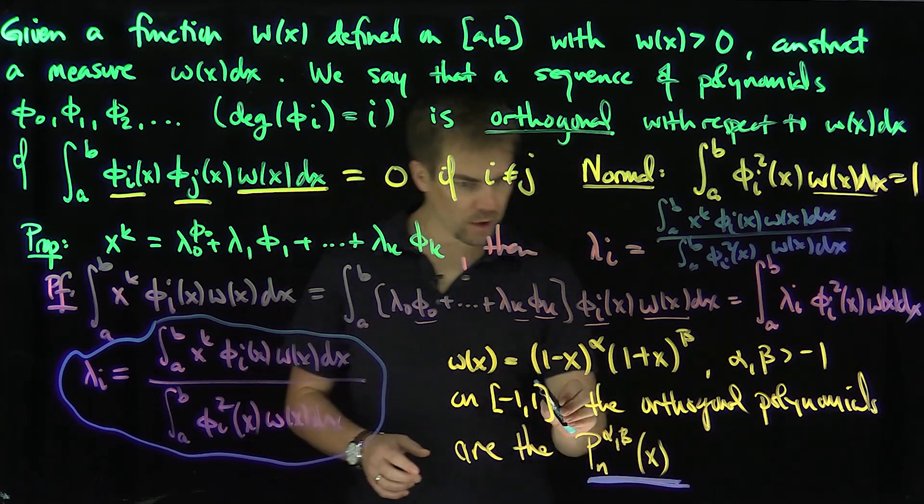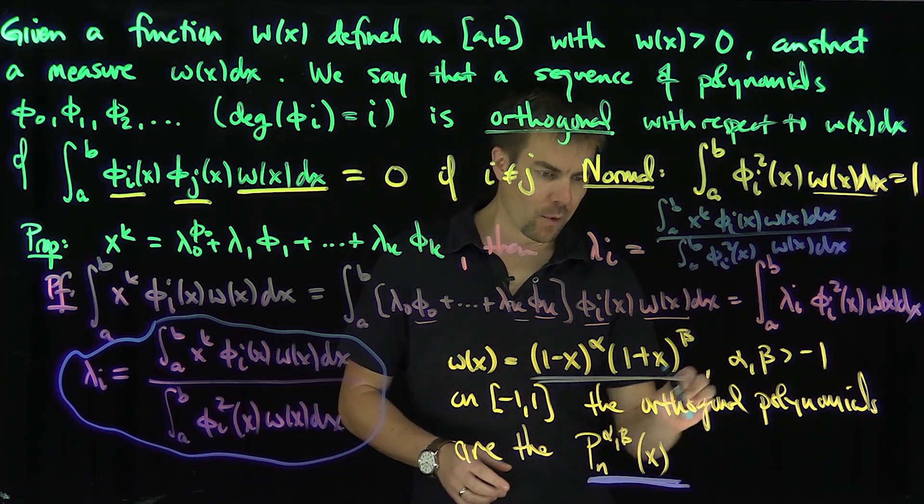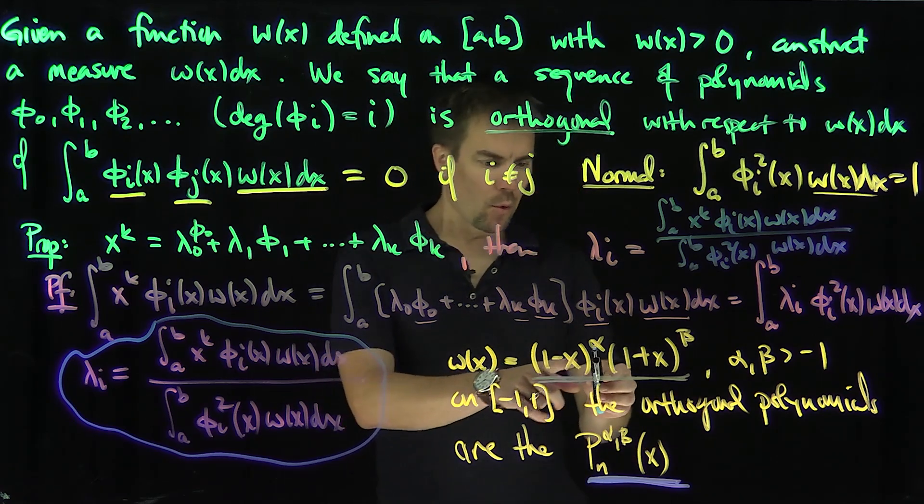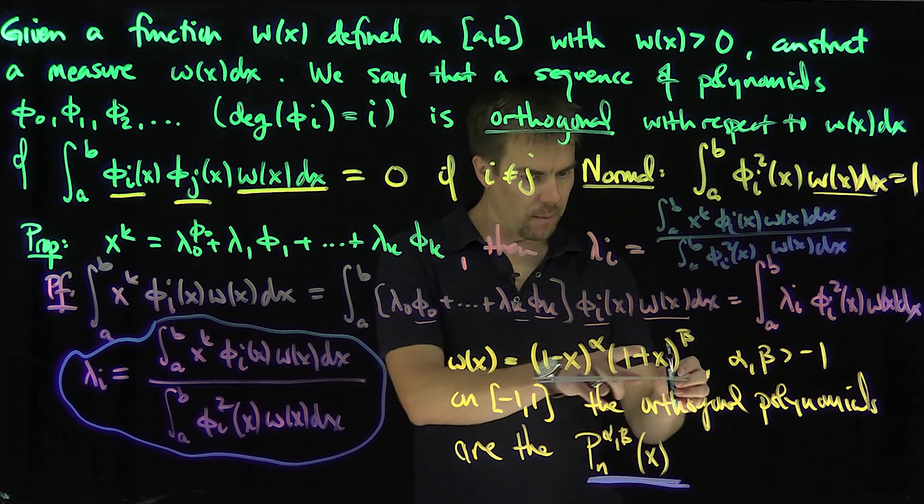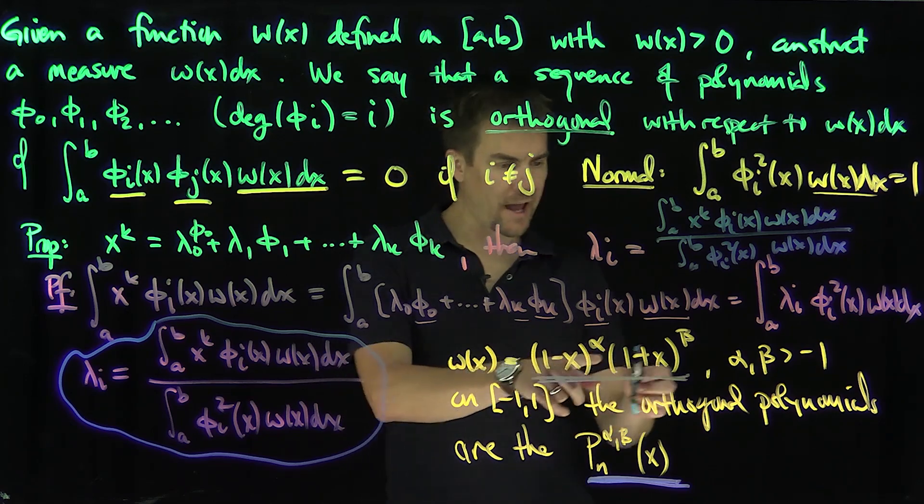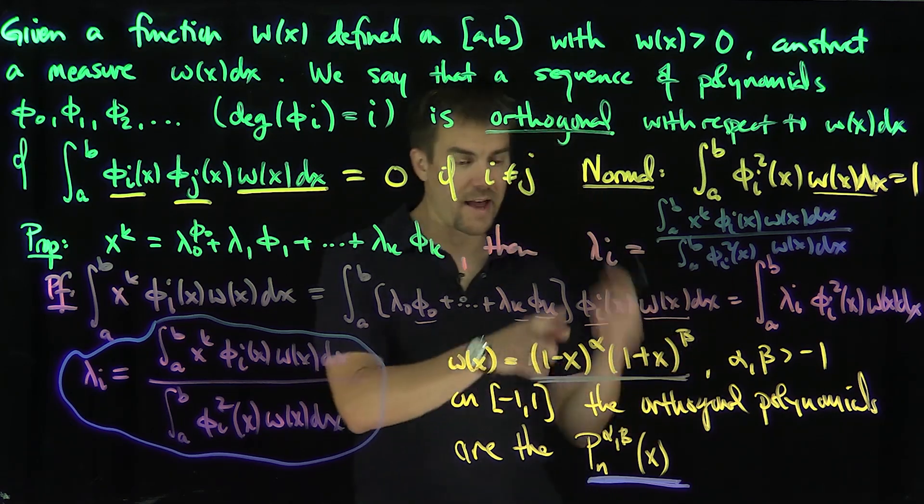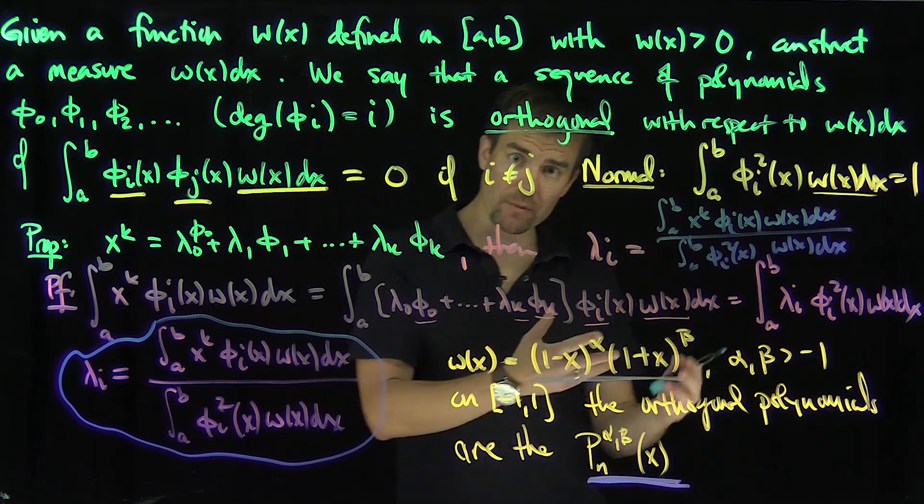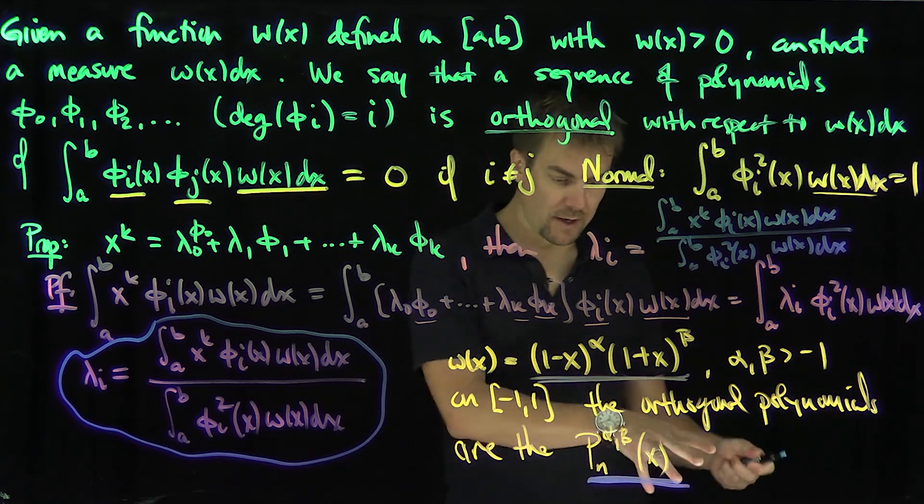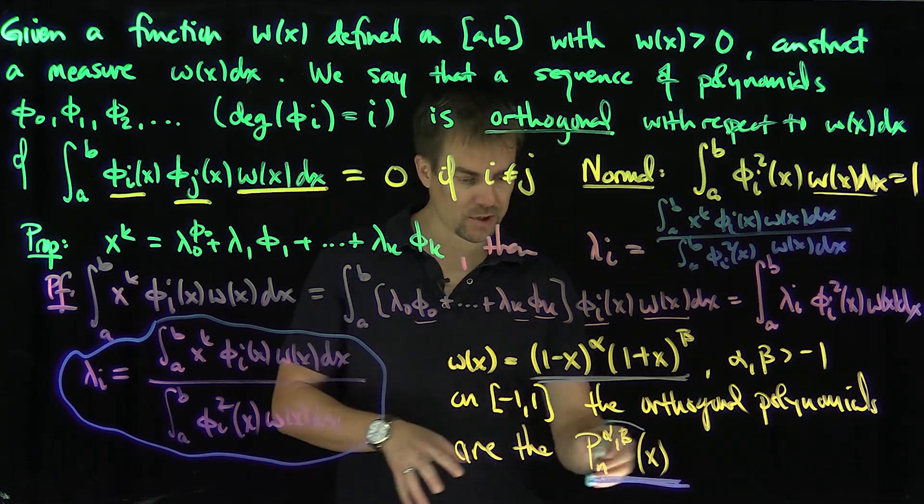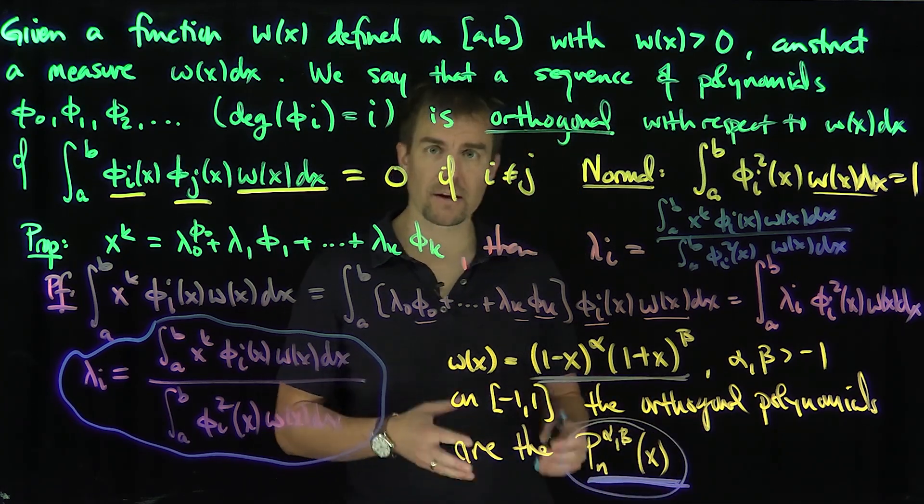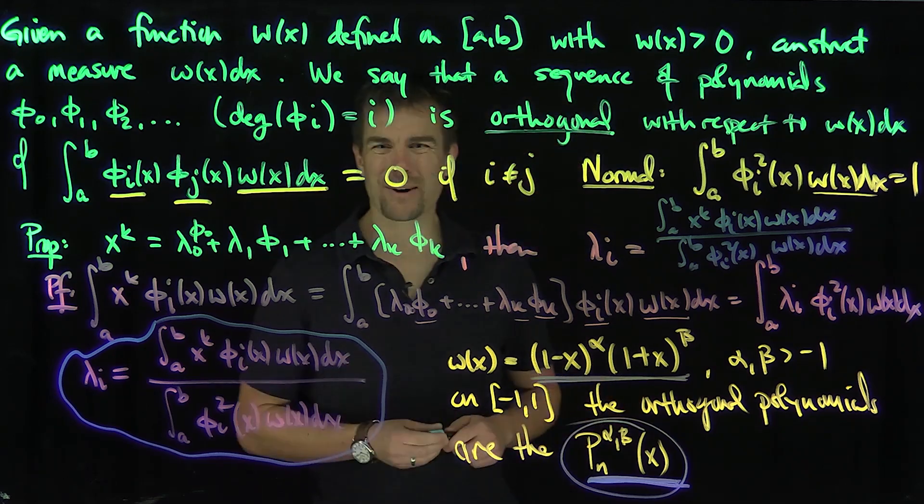Anyway, we're going to look at these weights in particular. So for example, when we look at α equals zero, β equals zero, we get the Legendre polynomials. We look at α equals negative one half, β equals negative one half, we get the Chebyshev polynomials. We get a wide variety of these, different classes of these things, and we'll study this particular class P_n^(α,β) in further videos. Thank you very much.